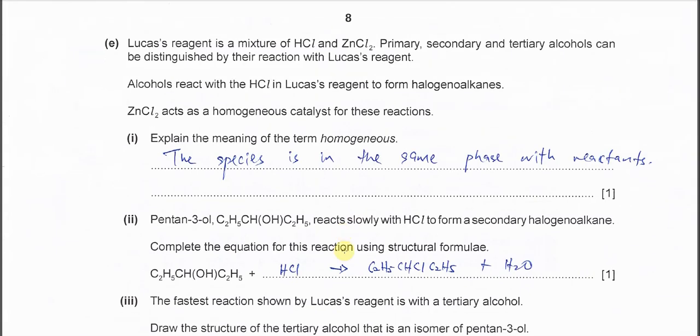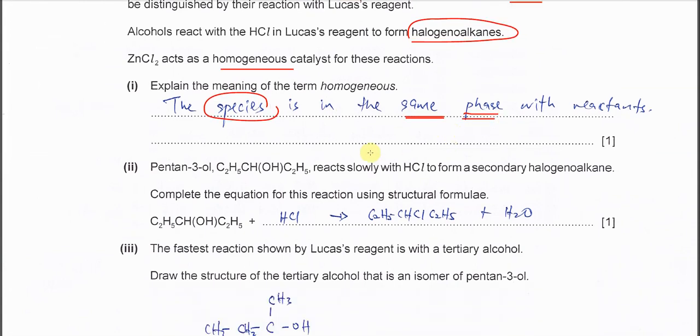Part E. We have this Lucas reagent which is the HCl and the zinc chloride. And this one will react with primary, secondary, tertiary alcohols and it will form the haloalkane. And the zinc chloride acts as homogeneous catalyst. Explain what it means by homogeneous. Very easy. The catalyst or the species which is in the same phase with the reactants.